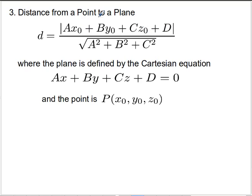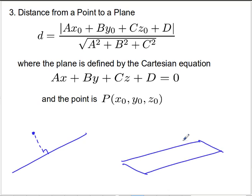What about the case where we have the distance from a point to a plane? When we talk about the distance from a point to a line, just as we did in R2, the distance we're interested in is the perpendicular distance. So if I have a plane, then the distance from a point to that plane is going to be the perpendicular distance to the plane. Whenever we're talking about shortest distances, we're always talking about perpendiculars — perpendicular to the plane at that point.